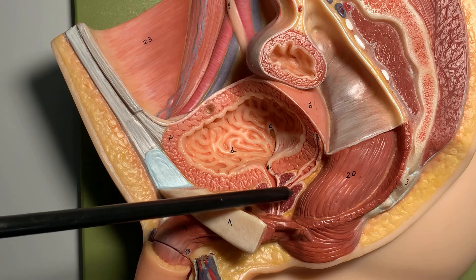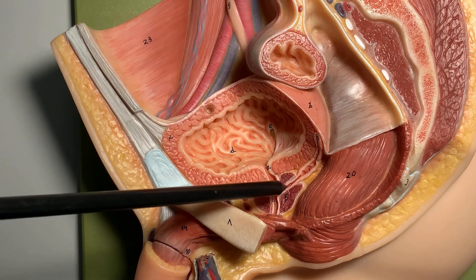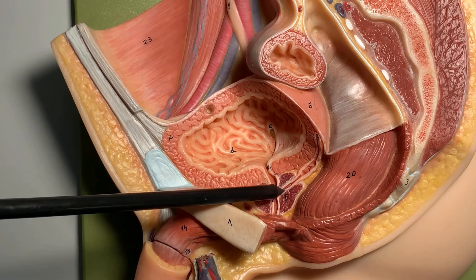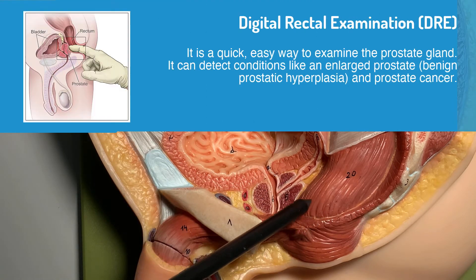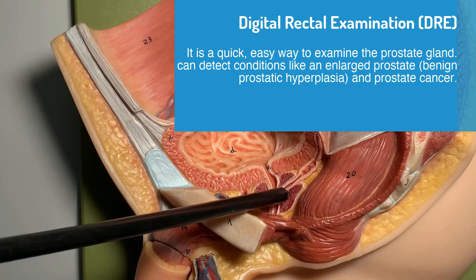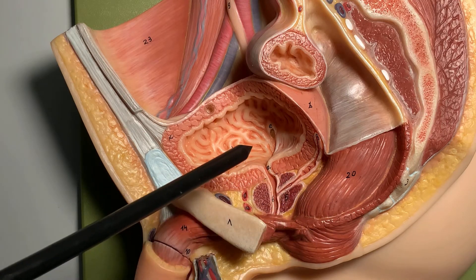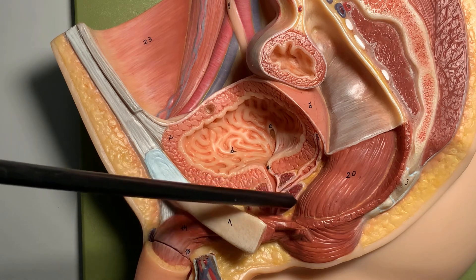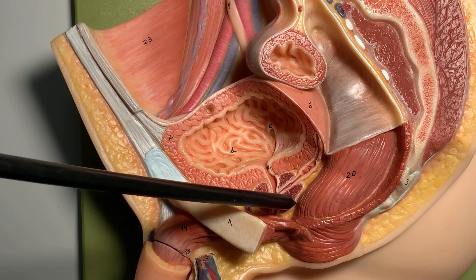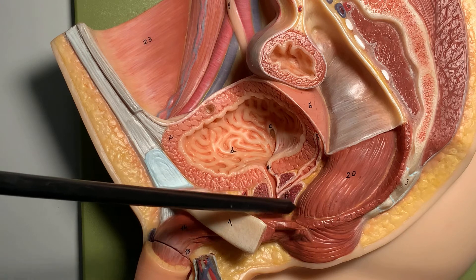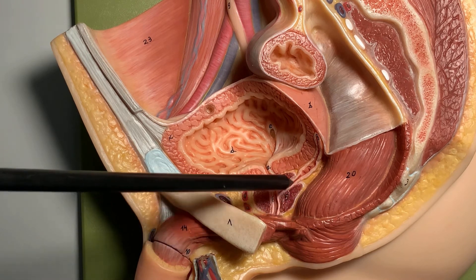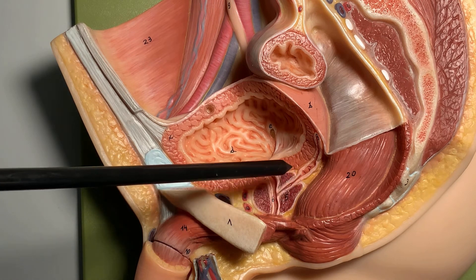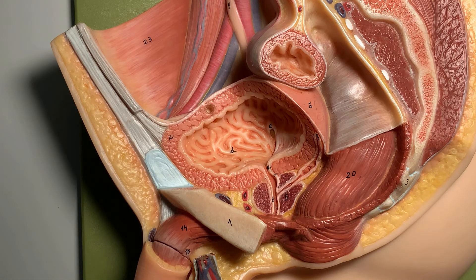During digital rectal examination we can easily palpate this prostate gland, which has different zones. By placing a finger in the rectum we can palpate the prostate, and while we move the finger within the cavity we can appreciate if there is any abnormality or anything unusual on the surface of this prostate gland. It is a very easy diagnostic way to detect any nodularity, hardness, or anything related to the prostate gland, and that initiates further workup for looking for prostatic cancer.